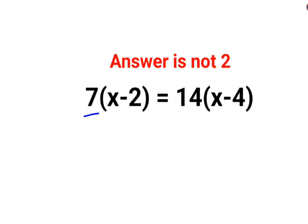The first method is just open the brackets on either side of the equal to. So we have 7x minus 14 equals to 14x minus 56.